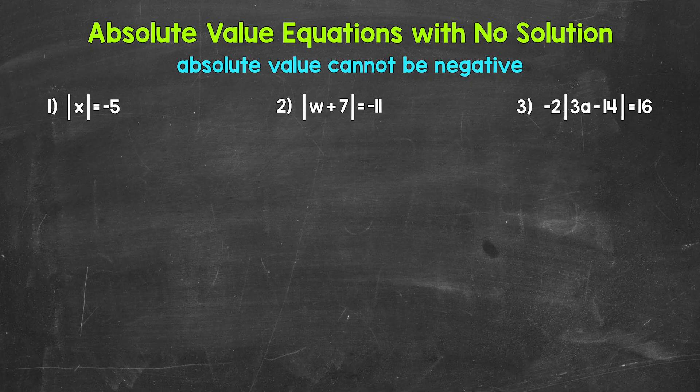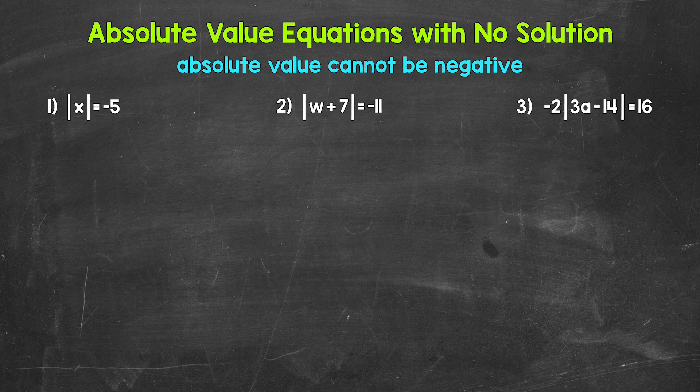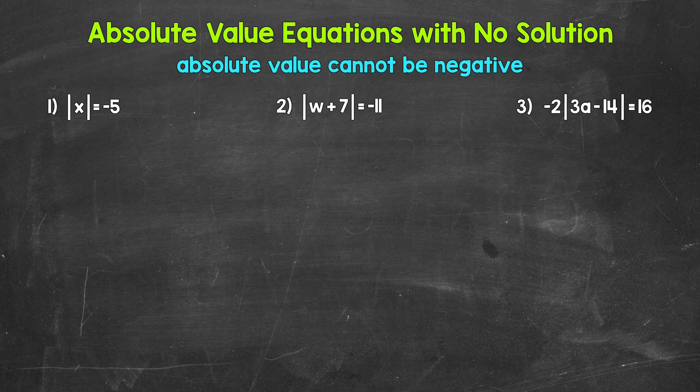Let's jump into number one, where we have the absolute value of x equals negative five. Now again, and this is very important, the absolute value of something cannot be negative. There's no way to make this work here.